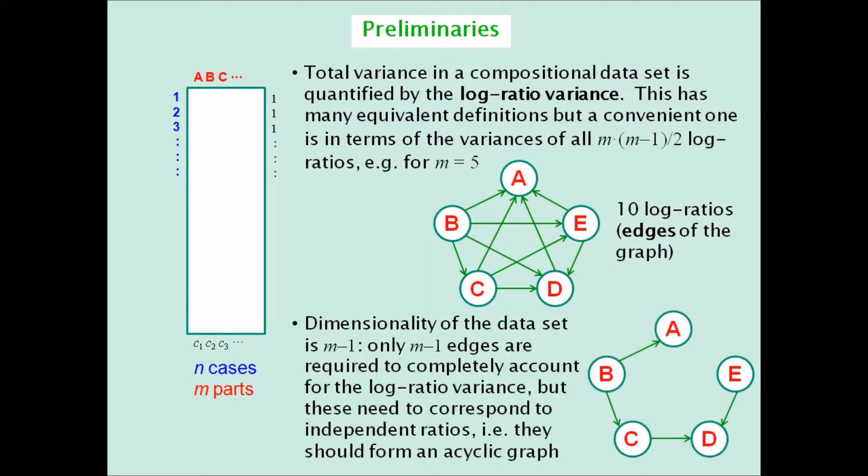So for M parts, M-1 edges, that is ratios, are needed that connect all the parts. Such a connected graph will necessarily have no cycle, that is be acyclic, and the four log ratios will fully explain the log ratio variance.